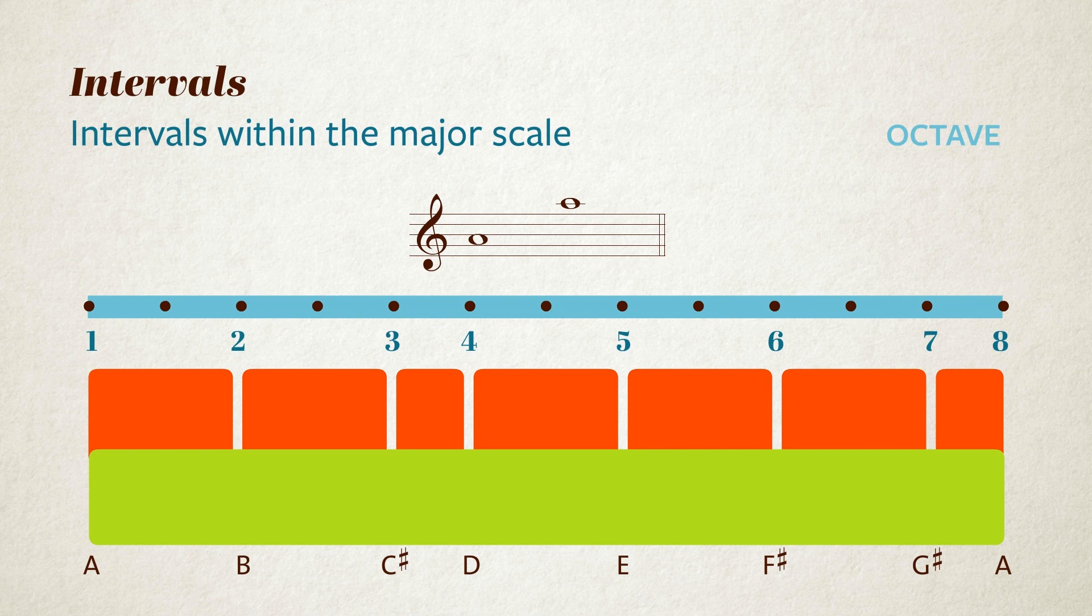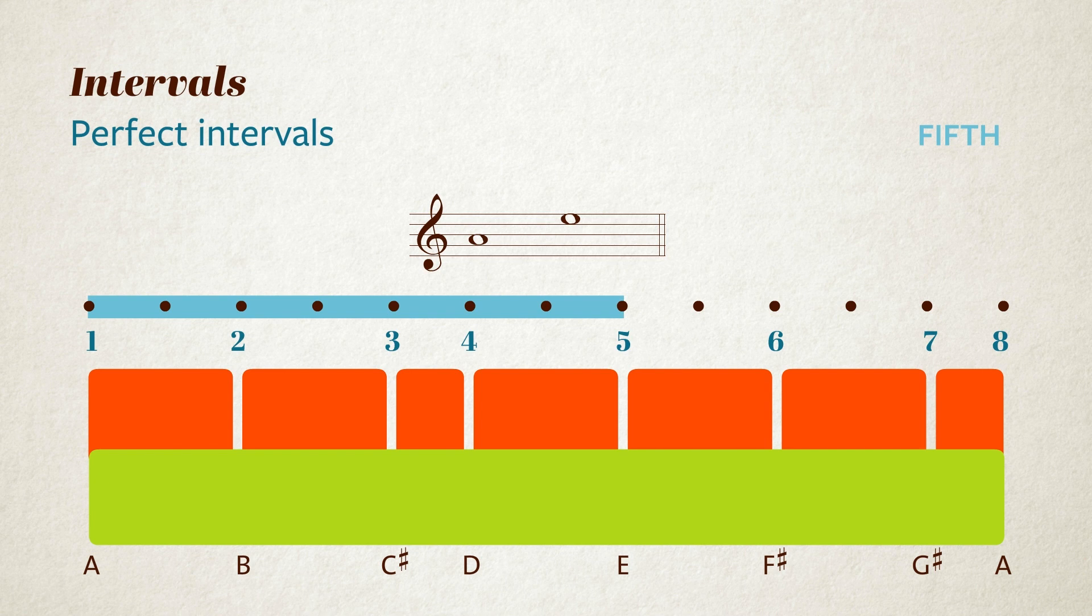We're going to look at the other intervals within the octave. All the intervals are named according to the number of scale steps that they span. This one, for example, which goes from A to E, is called a fifth because it spans from the first note of the scale to the fifth note.